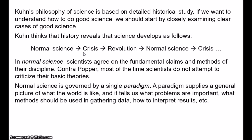Kuhn introduced the term 'paradigm' to describe this situation. You have to be quite careful here because Kuhn uses this term in many different ways — Margaret Masterman famously claimed to find 21 different interpretations of the term. But broadly speaking, a paradigm is a framework through which the scientist interprets the world. A paradigm supplies a general picture of what the world is like; it tells us what problems are important, what questions are to be asked, what methods we should use for gathering data, how experiments and instruments should be designed, how results should be interpreted, and so on. A paradigm is a way of doing science.